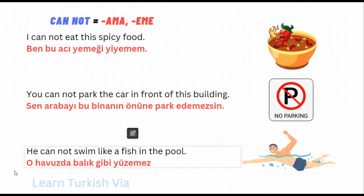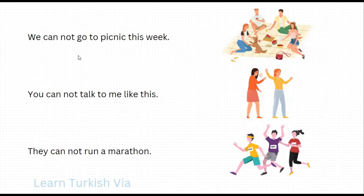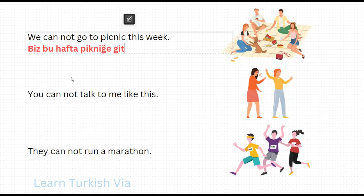We cannot go to picnic this week. Biz, this week – bu hafta. To picnic – pikniye. Go – git, cannot go – git-e-me, the t becomes d: gideme. We cannot go – gideyiz. There is no simple present tense negative suffix for we. So 'we cannot go to picnic this week' is 'Biz bu hafta pikniye gidemeiz.'